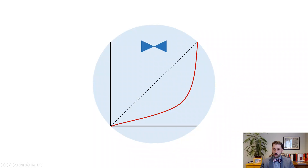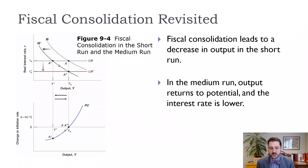What we want to think about in the medium run is what happens in the short run in terms of the IS and LM curves, and then what happens to inflationary expectations and how that affects the real interest rate. The real interest rate will shift the LM curve and get us back to our natural level of output. So here's our first example of a fiscal consolidation — remember, that's either a decrease in government spending or an increase in taxes.